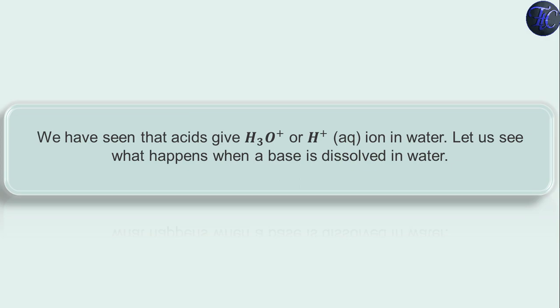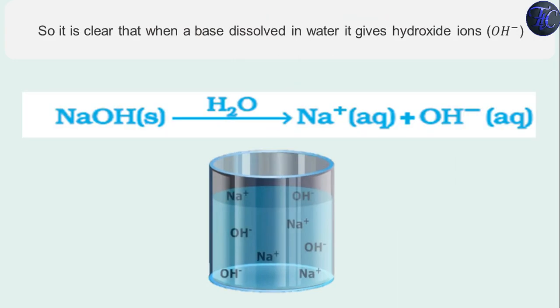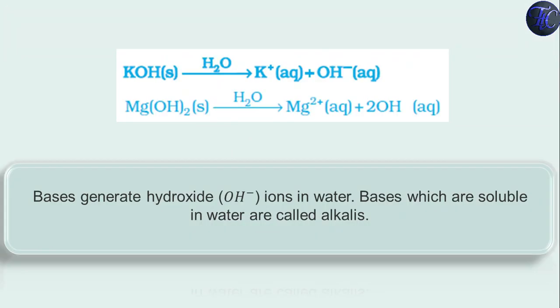Let us see what happens when a base is dissolved in water. Let us understand it with the help of activity. Take a jar and add water in it and now add NaOH in the water. What will happen if we add NaOH? As you can see here NaOH will react with H2O and it will form Na+ aqueous and OH- aqueous. It means that Na+ and OH- will be separated in aqueous solution of water.